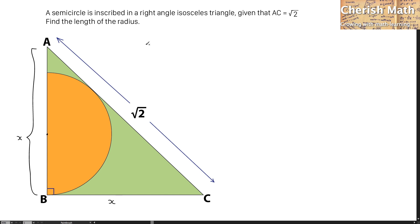I'm now going to work out the value of X by using Pythagoras Theorem. That would be X squared plus X squared is equal to the square root of 2 squared. I'm getting 2X squared is equal to 2.